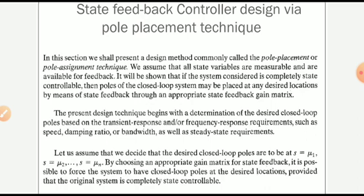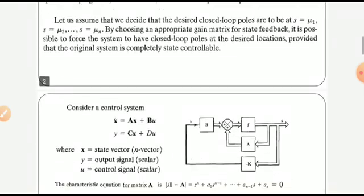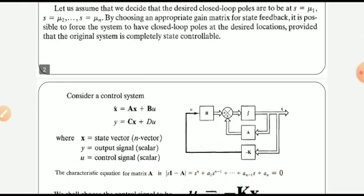Consider an nth-order system with the state space model: x-dot equal to Ax plus Bu, and y equal to Cx plus Du, where x represents the state vector with n state variables, y is the output signal, and u is the control signal. Let the desired closed-loop pole locations be at s equal to mu-1, mu-2, and so on.